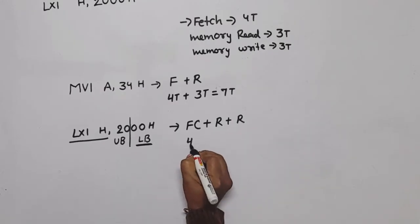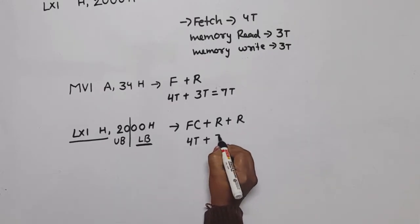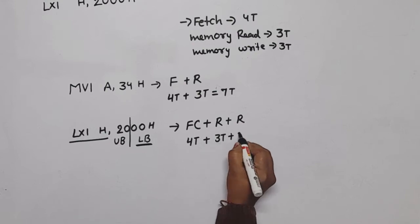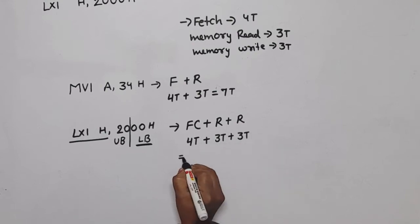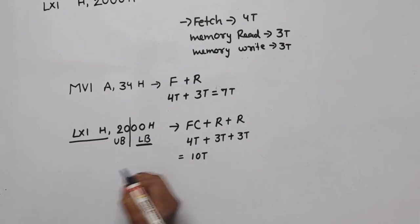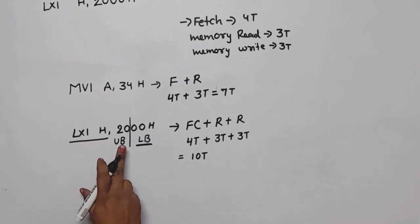So now how many T? 4T for fetch cycle, 3T for one read, plus 3T for second read, total 10T. Means LXI H,2000H we need 10T.